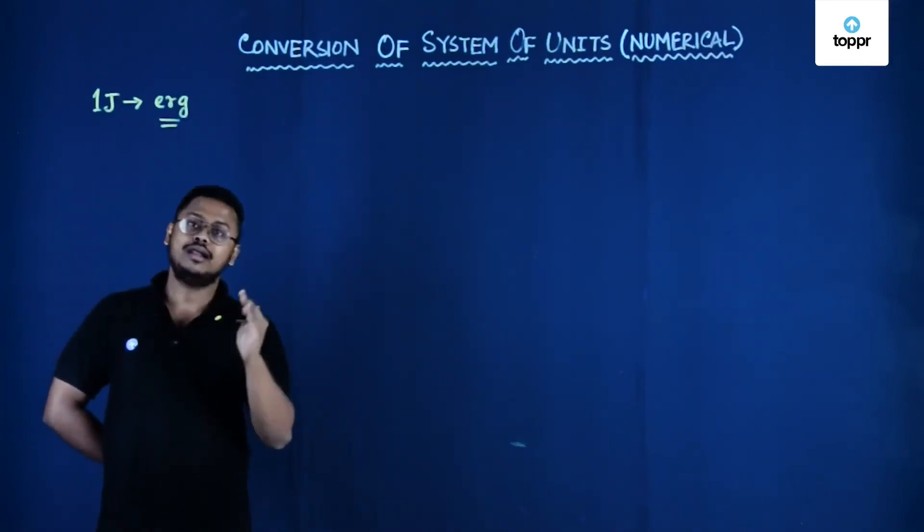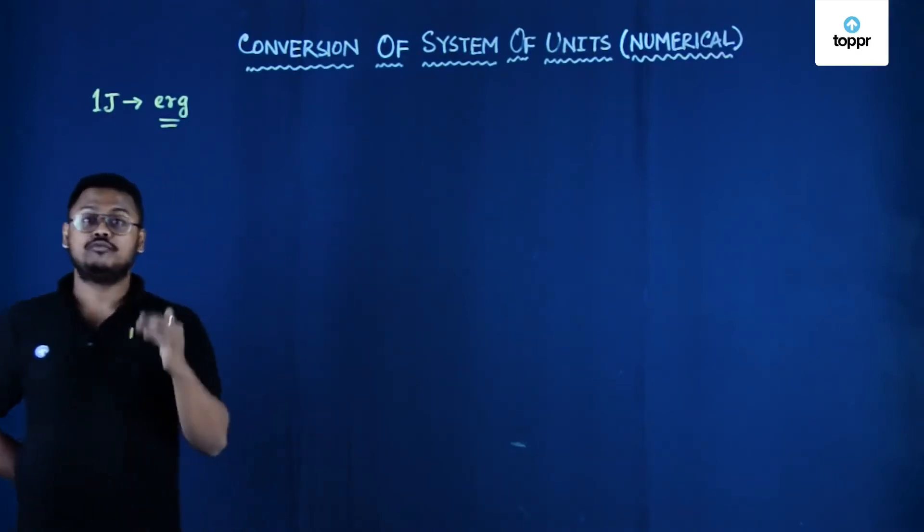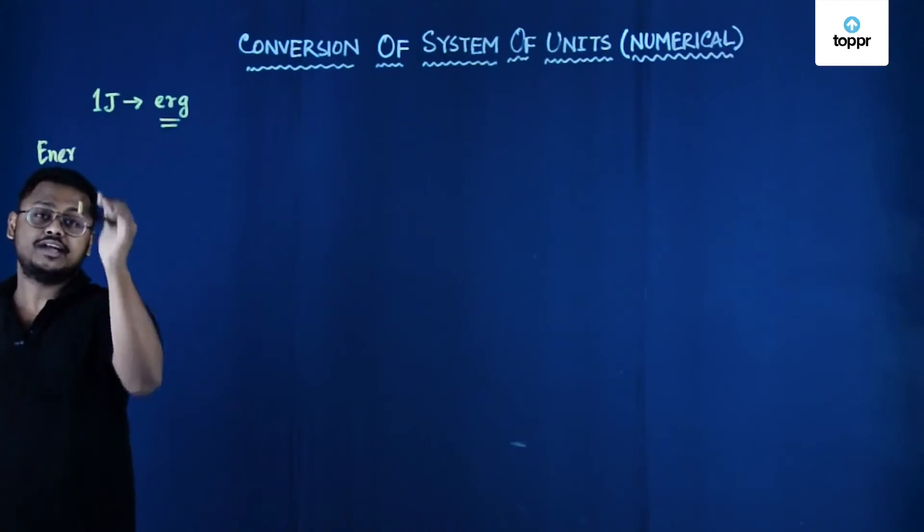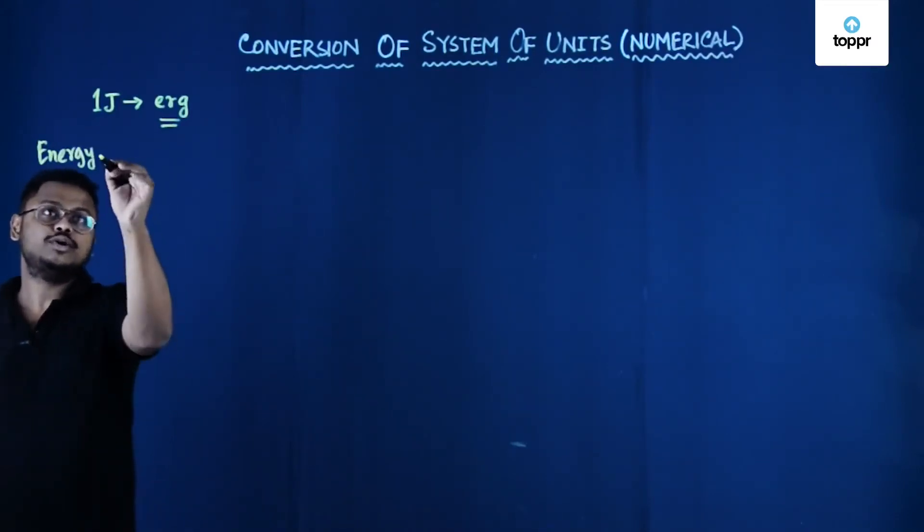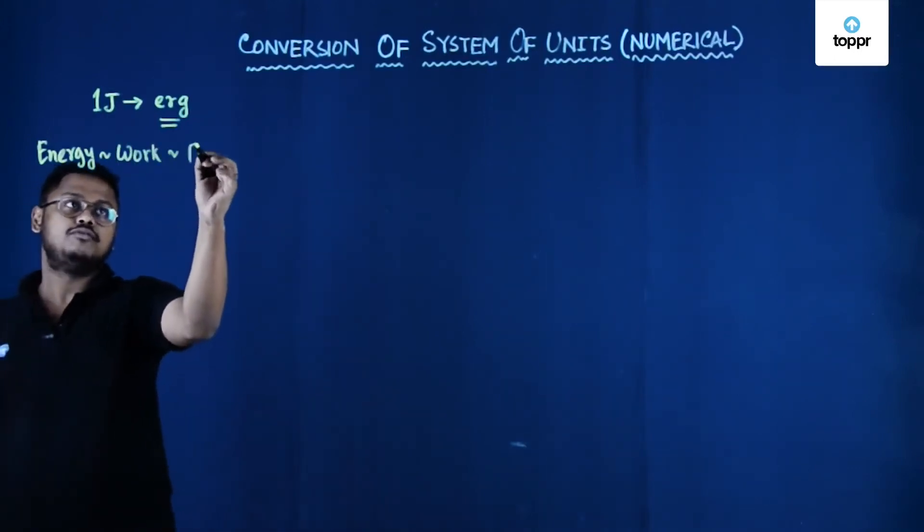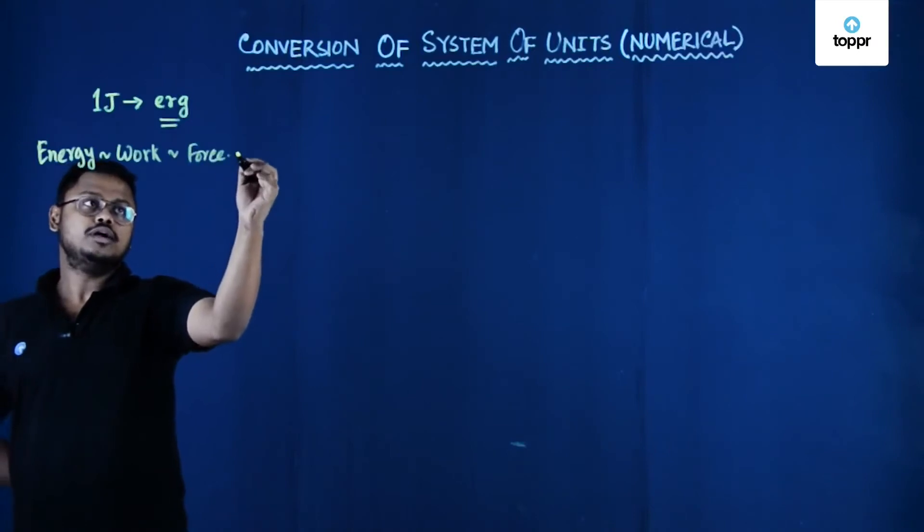Now, joule and erg both are the unit of which quantity? That is energy. So let's first find out the dimension of energy. Energy has got the dimension equal to work, and work means force into displacement.